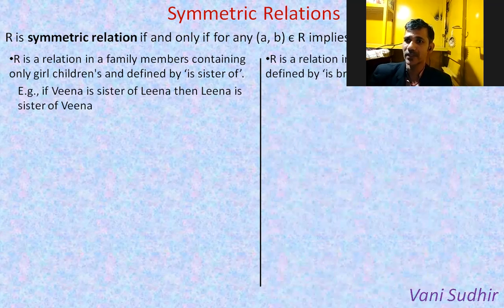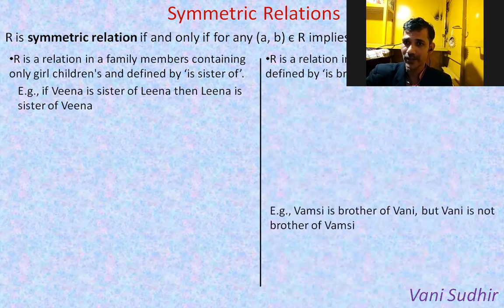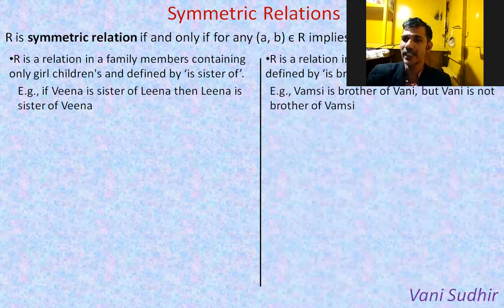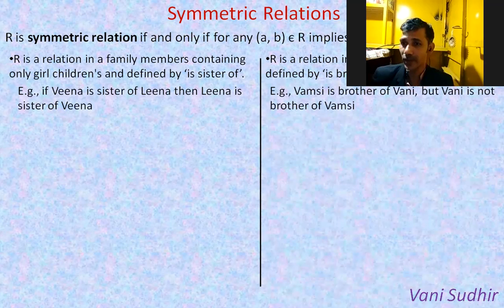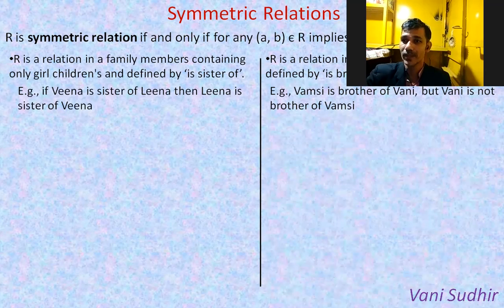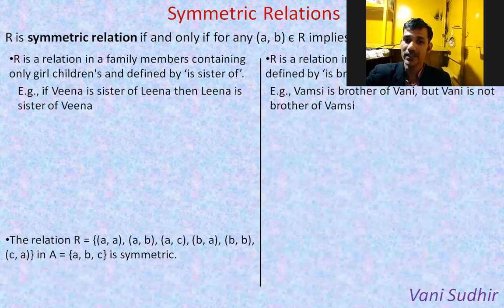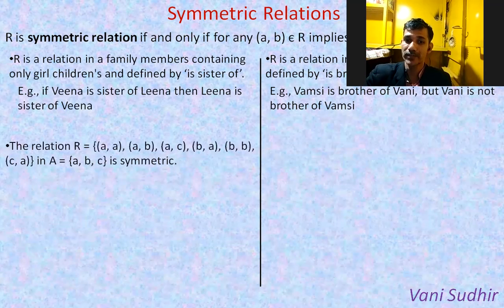Suppose in family members, we take 'is brother of'. One girl child and one boy are there. Vamsi is brother of Vani, but we cannot say Vani is brother of Vamsi — Vani will be sister of Vamsi. So that is not a symmetric relation.